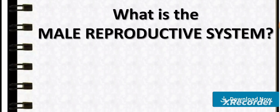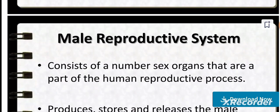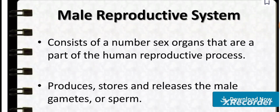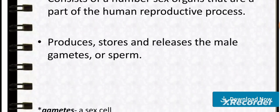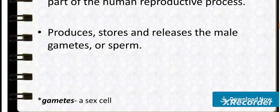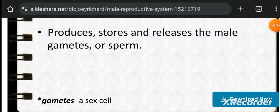The male reproductive system consists of a number of sex organs that are part of the human reproductive process. It produces, stores, and releases the male gametes, or sperm. A gamete is a sex cell.